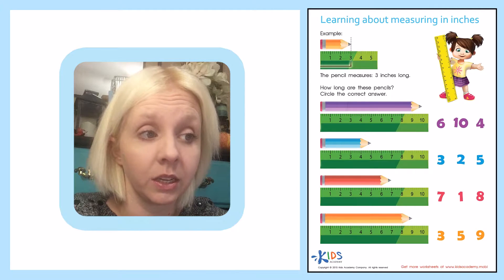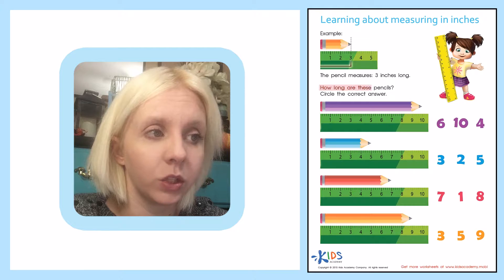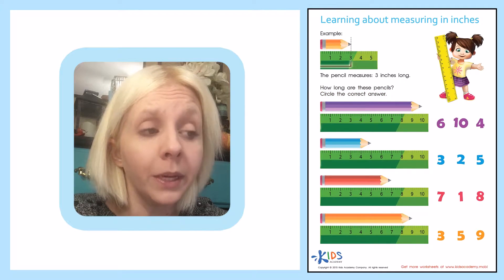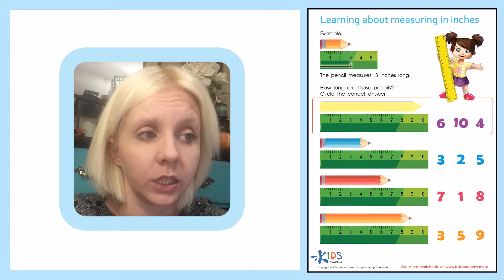So let's go down to these next pencils and let's see how long they are. It says, how long are these pencils? Circle the correct answer. So our pencil is already lined up for us against the ruler.